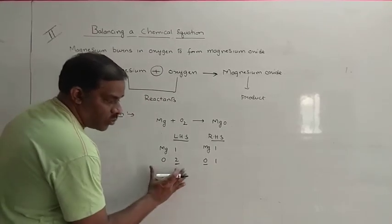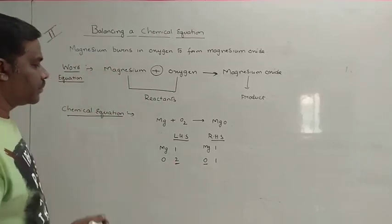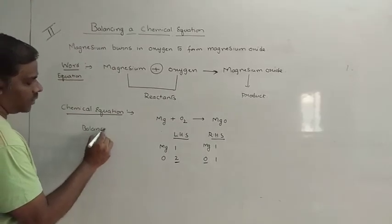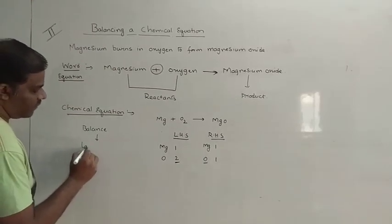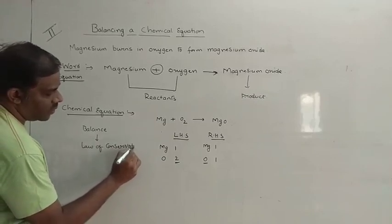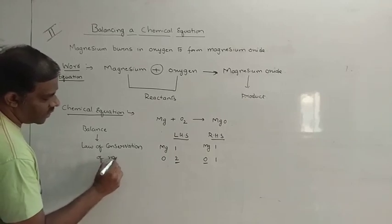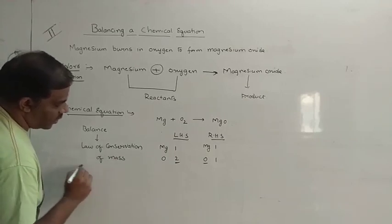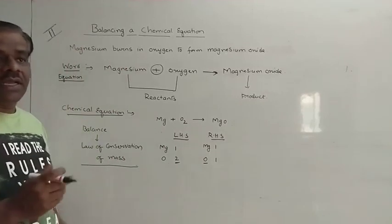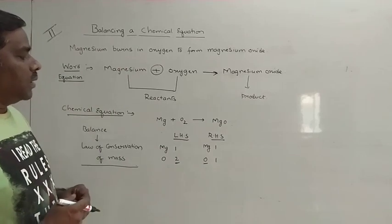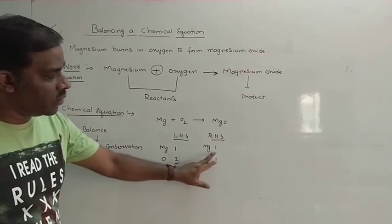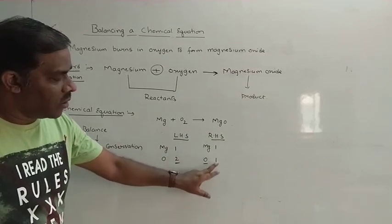As we compare the number of oxygens, they are unbalanced. So what we need to do to balance it, and why should we balance a particular equation? We need to balance an equation to satisfy the law of conservation of mass. According to this law, matter can neither be created nor destroyed in a chemical reaction. That means the number of atoms of all the elements on the left-hand side should be equal to the number on the right-hand side.